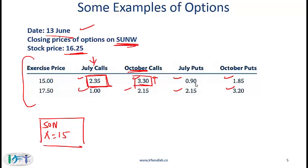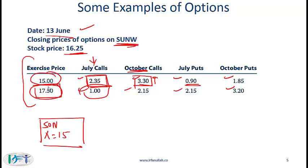Looking at the puts: the July put is trading at $0.90 and the October put at $1.85. Again, a put expiring further out has a higher price. With an exercise price of $17.50, the July call is worth $1 and is worth less because the right to buy at a higher strike of $17.50 is less valuable than the right to buy at $15. On the other hand, with puts, the right to sell at $17.50 is worth more than the right to sell at $15.